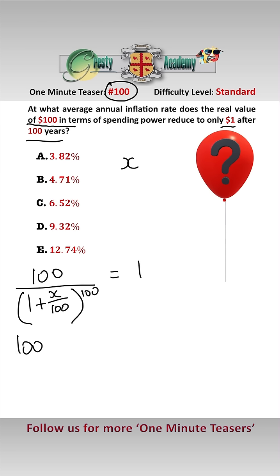Solving this, we get 100 equals 1 add X over 100 to the power of 100. That is, 100 to the power of 100 equals 1 add X over 100, or X equals 100 to the power of 1 over 100 take away 1 times 100.